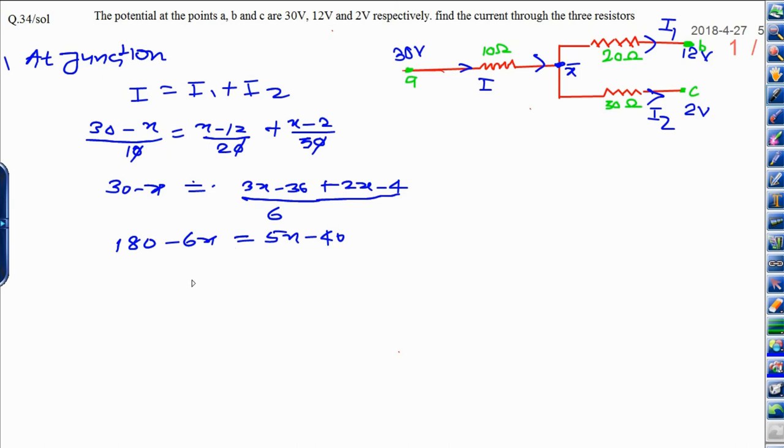Now, take 6X this side, it will be 11X which is equal to 180 plus 40 that will be 220. When you calculate the value of X, that will be 20.